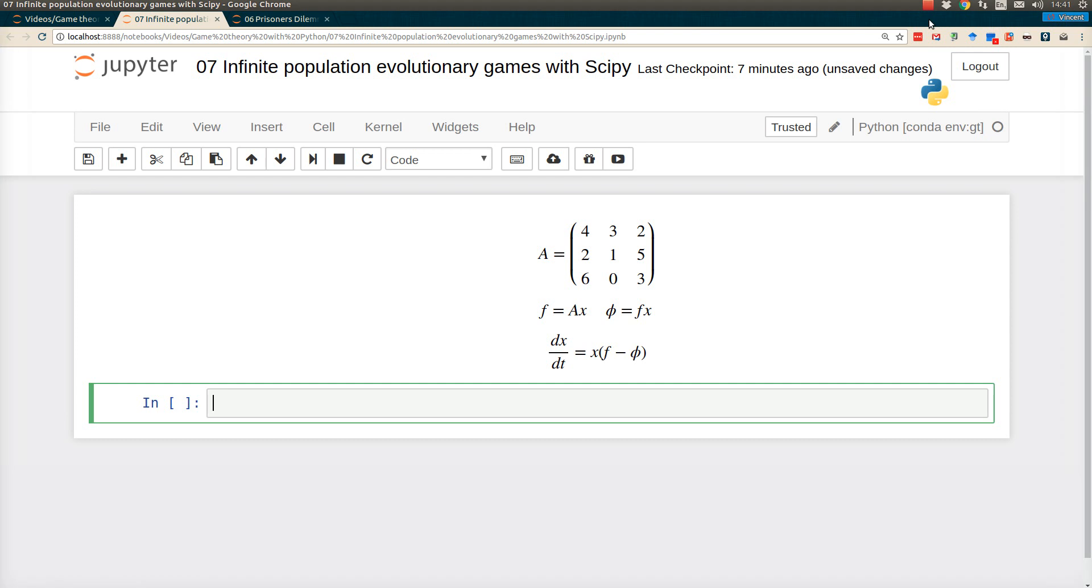Here we're going to look at something a bit different: an infinite population evolutionary game. The idea is we're looking at the evolutionary process where we have a population of strategies. Let's say we have three strategies in our population. When the first strategy meets another member of the population, if they meet another first strategy, they get four. If they meet a second strategy, they get three. If they meet the third strategy, they get two.